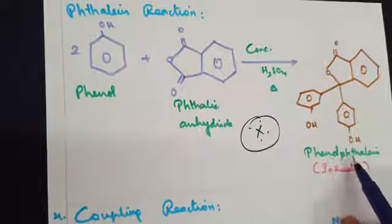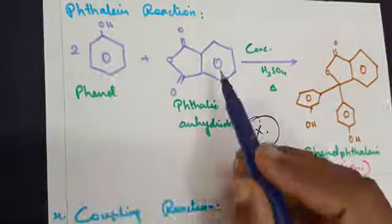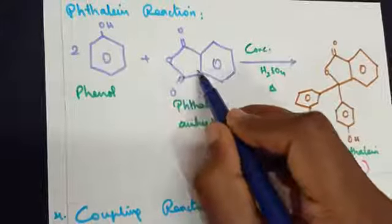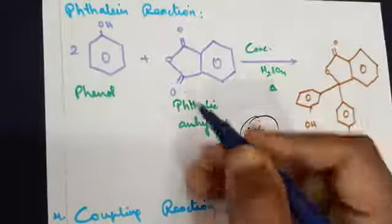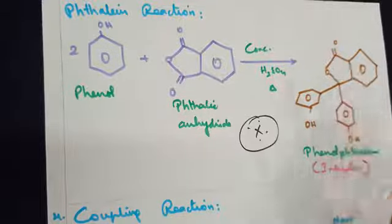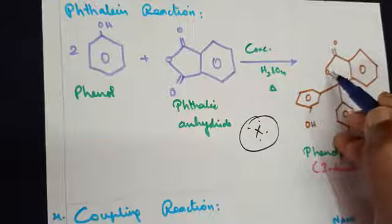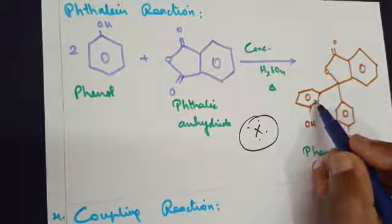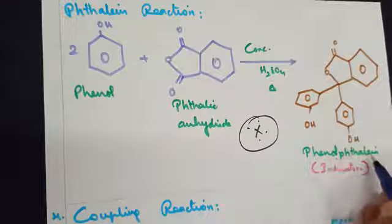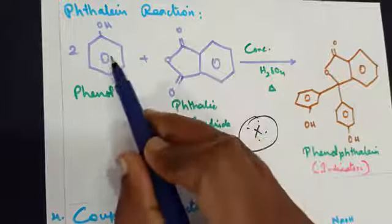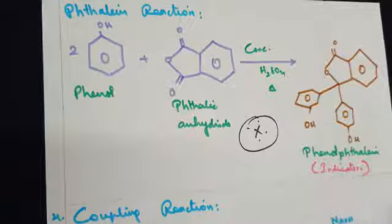The next type is the phthalein reaction — very important for preparation of the phenolphthalein indicator. Two moles of phenol are treated with phthalic anhydride (a benzene ring with a pentagonal anhydride structure bearing two C=O groups) in the presence of concentrated H2SO4 with heating. The two C=O bonds of the anhydride are replaced by the two phenolic groups, one on each bond. The product is called phenolphthalein, which is used as an indicator.